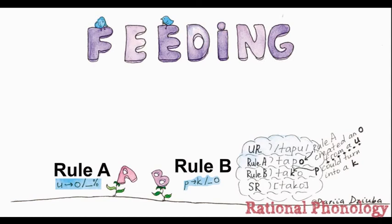However, Rule A turns that U into an O, which creates conditions for that P to turn into a K. And we have taco on the surface.